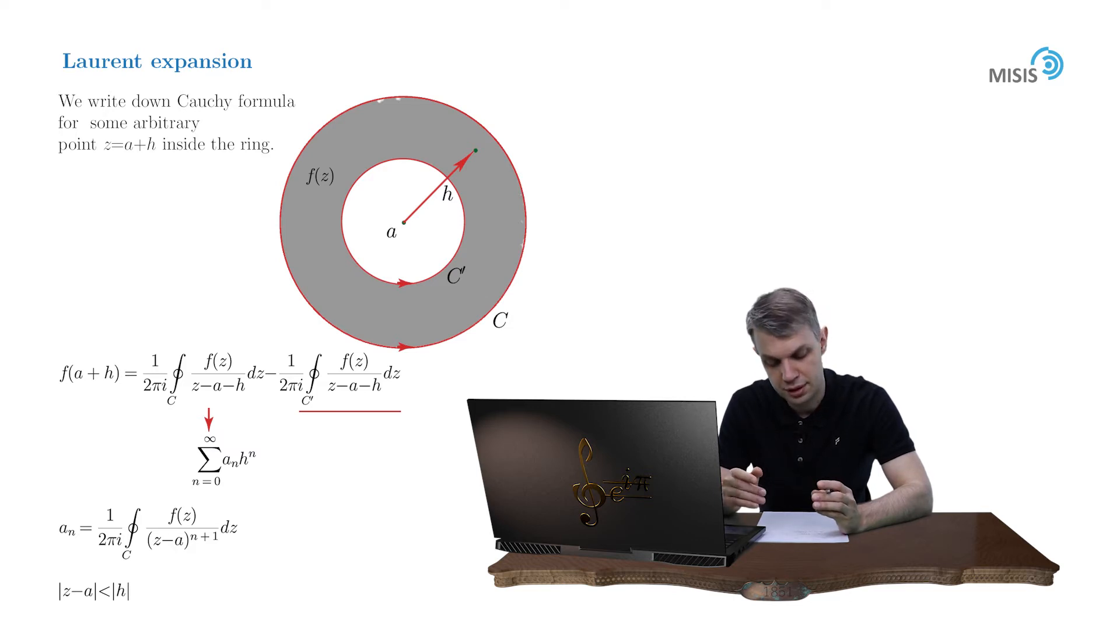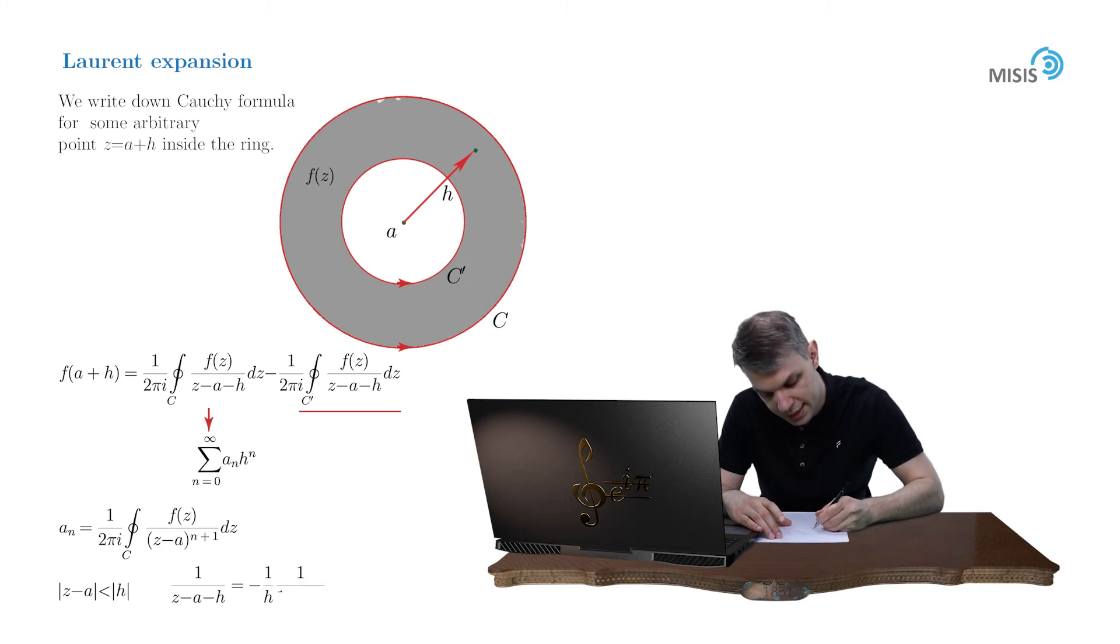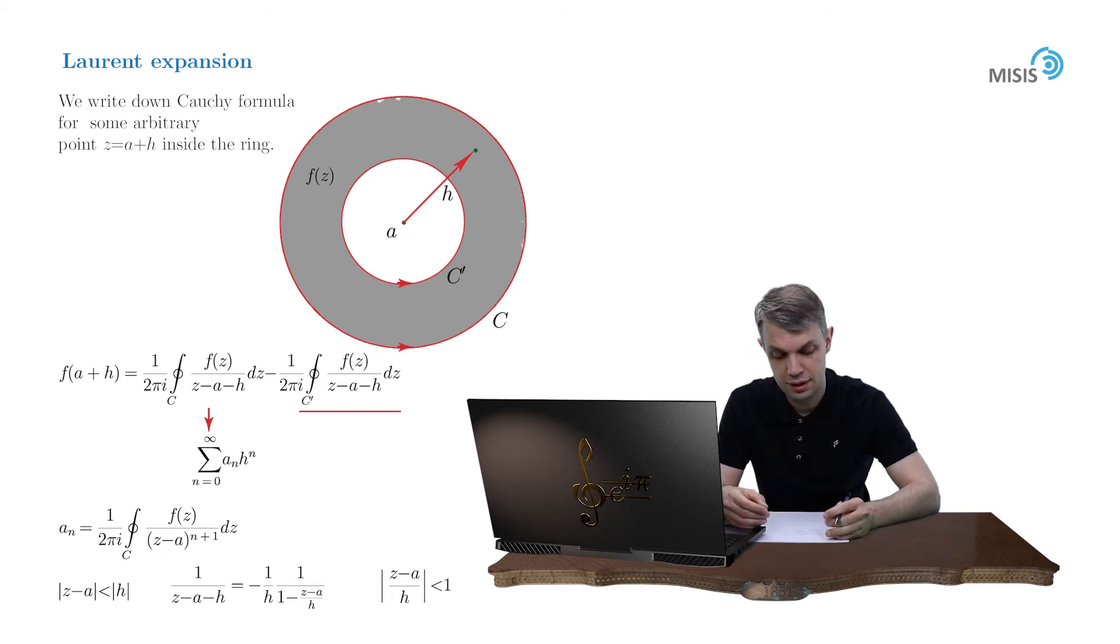So what we do here, we factor out minus H from the denominator and obtain 1 minus Z minus A over H. Now the modulus of Z minus A over H is always smaller than 1. And we turn this fraction into a convergent geometric series.